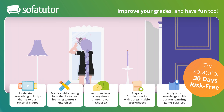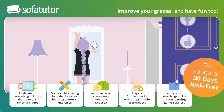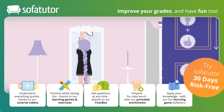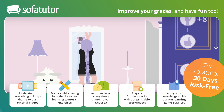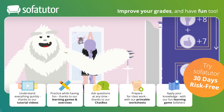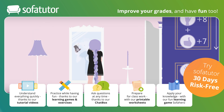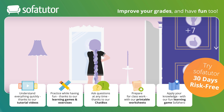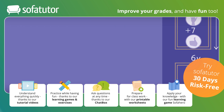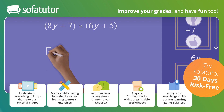Rapunzel uses the width of her hand and also her thumb to measure the length and width of her magical mirror. The length of the mirror is 8 times her hand and 7 times her thumb. She knows her thumb is about an inch wide. The width is 6 times her hand and 5 times her thumb. We can use a special method to calculate the area of the magical mirror — the FOIL method, which works only when you multiply two binomials.